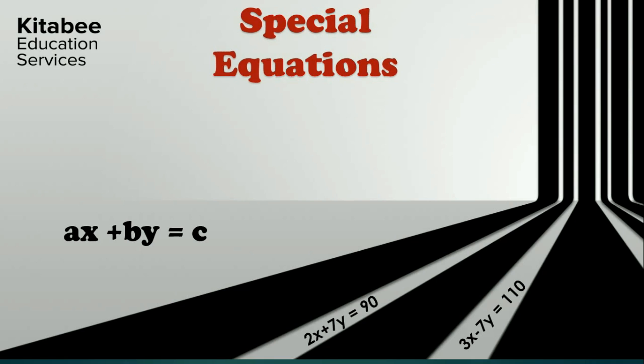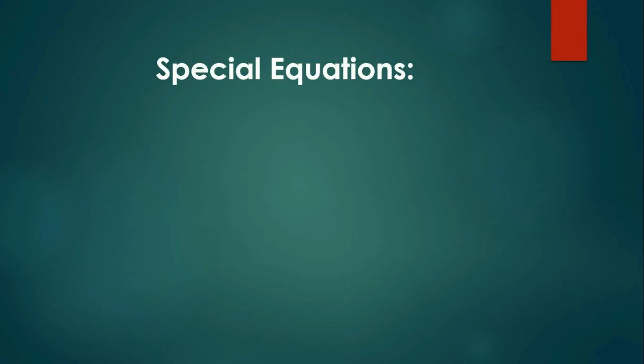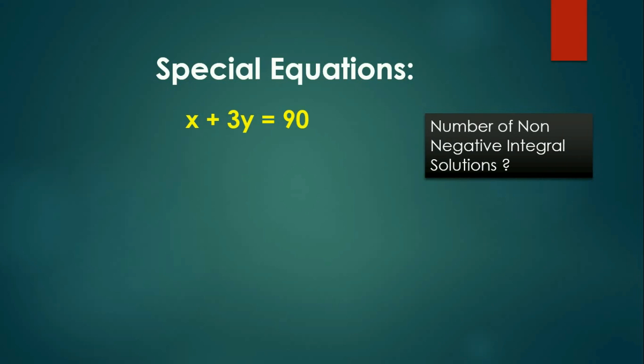So let's see what this chapter is all about. Let's take an example. Let's say we have an equation x plus 3y equal to 90. Now, this equation has infinite solutions, so the values of x and y satisfying this equation would be infinite. But if we talk about the number of non-negative integral solutions, then that would be limited.